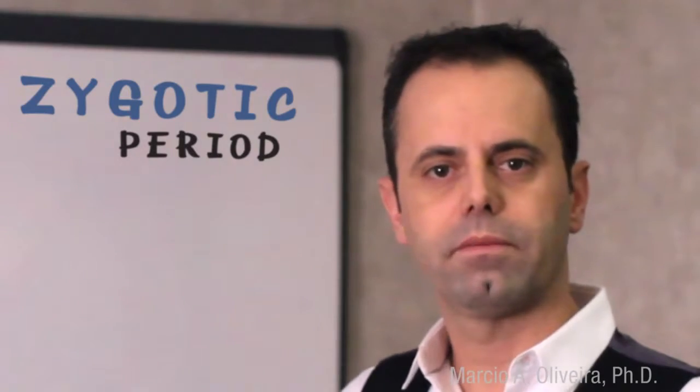Eventually, we get a small embryo, and some months later this would be born as a young baby. Let's start with the first period: the zygotic period.